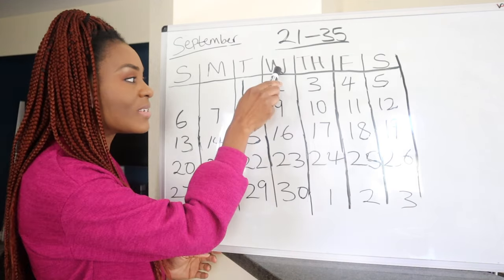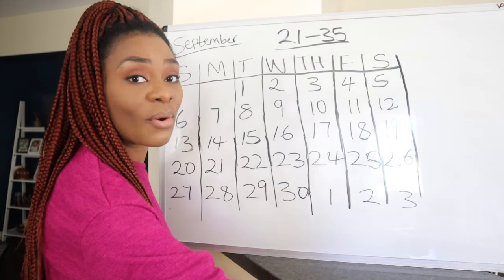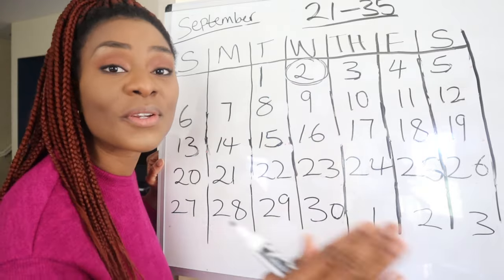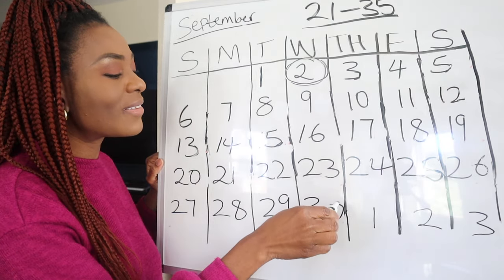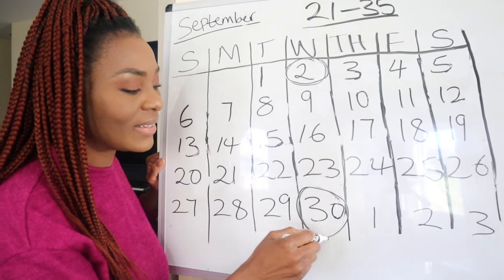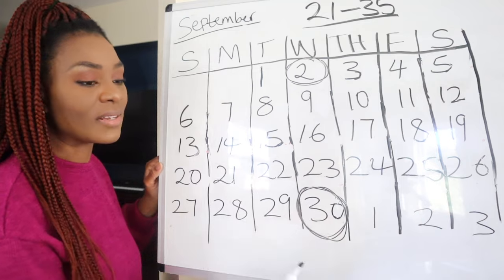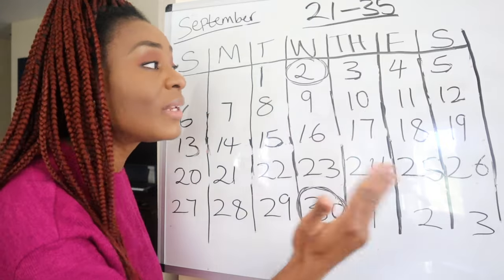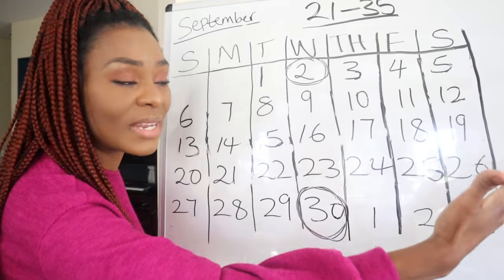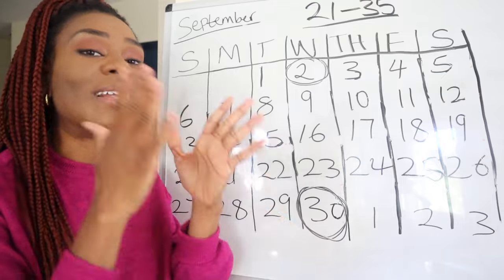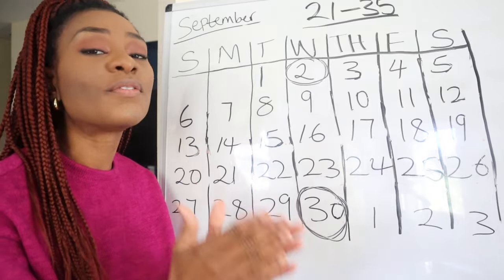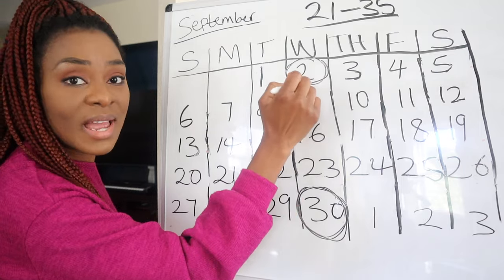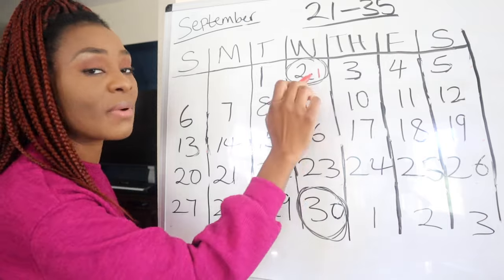Let's say your period started on Wednesday, September 2nd — circle that date on your calendar. Then wait for your next period. Let's say your next period came on September 30th — circle that date too. The number of days in between, including the days you bled, all put together is the full length of your menstrual cycle.